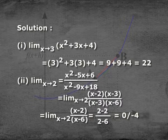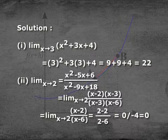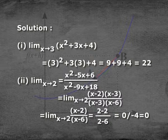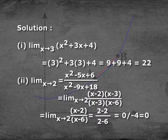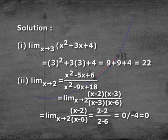Second: limit x→2 of (x² − 5x + 6)/(x² − 9x + 18). Factoring: this equals limit x→2 of [(x−2)(x−3)] / [(x−3)(x−6)], which simplifies to limit x→2 of (x−2)/(x−6), which equals (2−2)/(2−6) = 0/(−4) = 0.